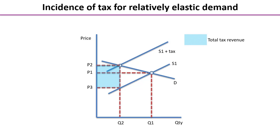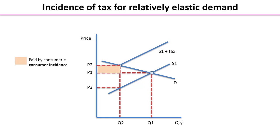You might have noticed that the price has only gone up from P1 to P2, whereas the tax per unit is the entire distance from P2 to P3. This allows us to explore the impact on different agents. Because the price has only risen by a small proportion of the overall tax per unit — from P1 to P2 — that top rectangle is the proportion of the tax paid by consumers. We call that the consumer incidence of tax, or sometimes the burden of tax on consumers.